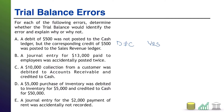Error B: a journal entry for $13,000 paid to employees was accidentally posted twice. A payment to employees is a debit to salary and wages expense, credit cash — both $13,000. If you do it twice, you're still debiting and crediting $13,000, just twice for a total of $26,000. Debits and credits will still equal each other — they'll be wrong, but equally wrong — so the trial balance will not catch this error.